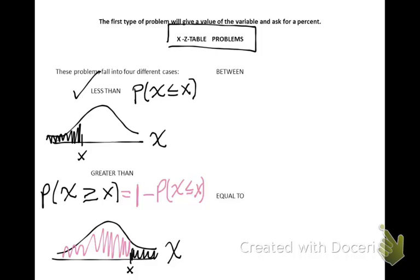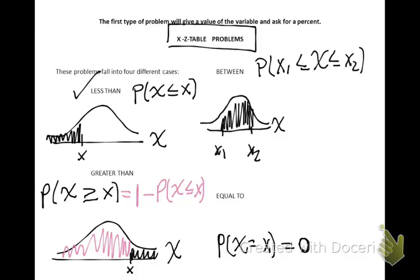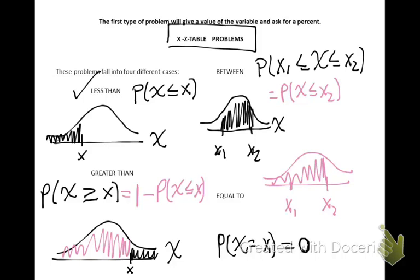The third type is an equal to case — the probability that x equals a specific number — and this is always zero for continuous data. The last case is a between: the probability that x falls between two observations x1 and x2. The table only gives a value from a number and smaller, so you find the probability of being at x2 or smaller, then subtract the probability of being smaller than x1. When you perform this subtraction, that portion disappears and you're left with the between area.